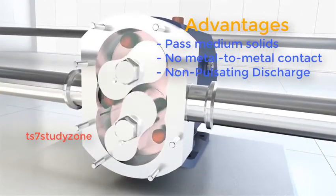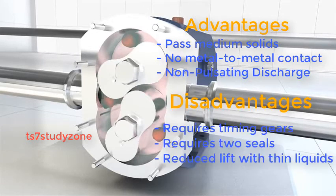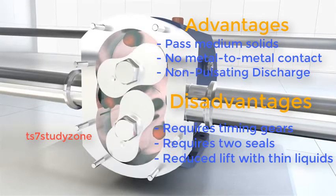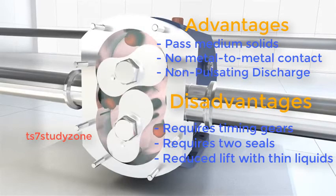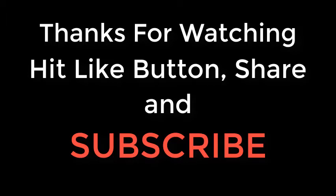Advantages of lobe pumps are: pass medium solids, no metal-to-metal contact, non-pulsating discharge. Disadvantages of lobe pumps are: requires timing gears, requires two seals, reduced lift with thin liquids. Thanks for watching, hit the like button, share, and don't forget to subscribe.